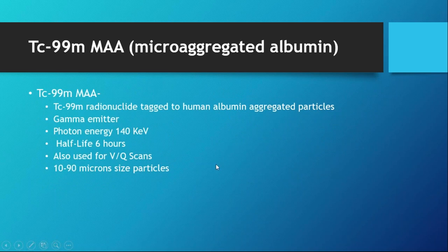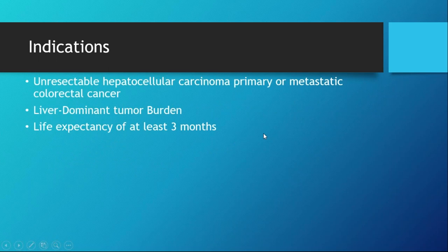Another aspect of Y90 therapy I want to discuss is Technetium macro-aggregated albumin particles, or MAA. This is used for the mapping procedure, not the treatment itself. Technetium has a photon energy of 140 keV, is a gamma emitter, and has a half-life of six hours — the same radioisotope used for VQ scans. The general indications for therapy include unresectable hepatocellular carcinoma, or primary or metastatic colorectal cancer. Ideally, you want liver-dominant tumor burden without extensive extra-hepatic disease, and a life expectancy of about three months.